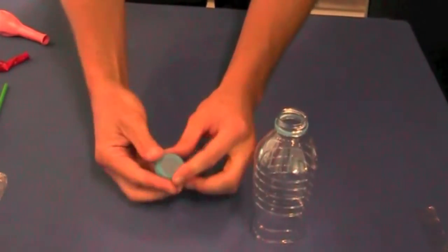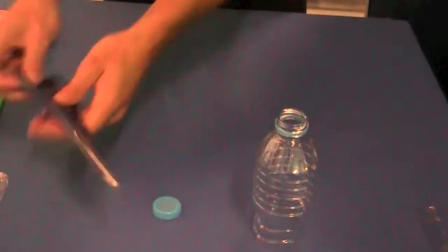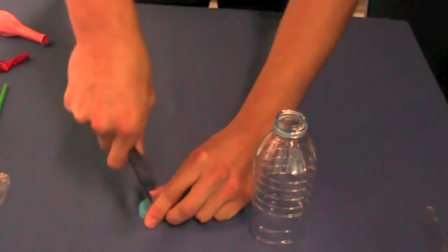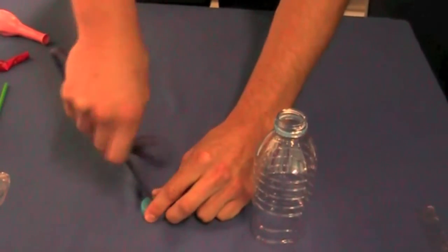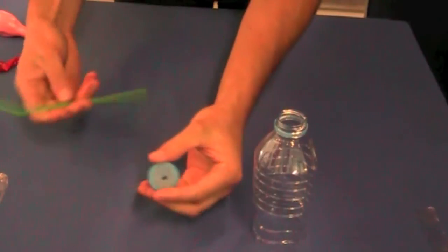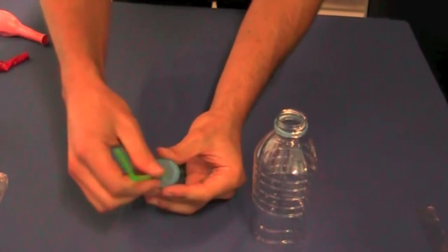Next thing to do is make a hole in our lid. Again, using our scissors, be careful, and just pierce through and give it a little twist. You want to make the hole big enough for our straw to fit through, like so.